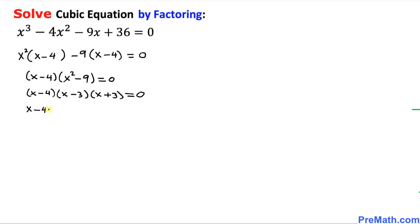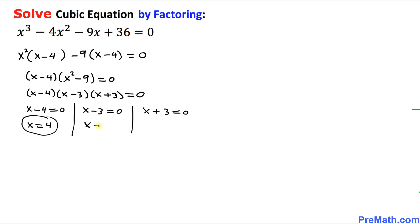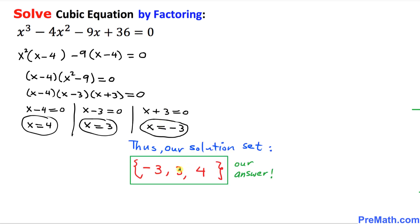So we can write x minus 4 equal to 0, x minus 3 equal to 0, and x plus 3 equal to 0. That means x equals positive 4 is one solution, x equals positive 3 is another, and x equals negative 3 is our third solution. And here is our complete solution set — that is our answer.